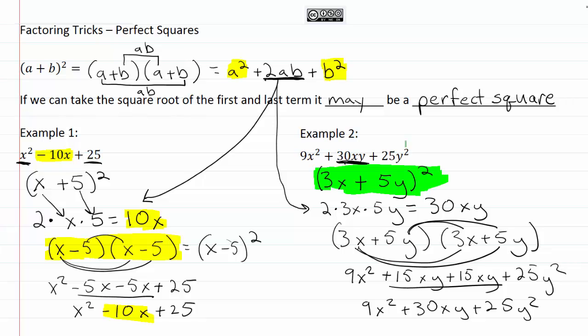So whenever you are given a factoring problem and you notice that it has a square number for the first term and a square number for the last term, you want to try using this trick seeing if it is a perfect square.